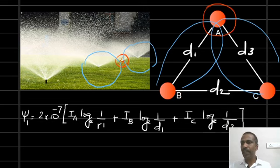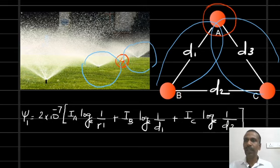Similarly, we can find out the magnetic flux linkage of conductor B, Ψ₂, and the flux linkage of conductor C, Ψ₃.